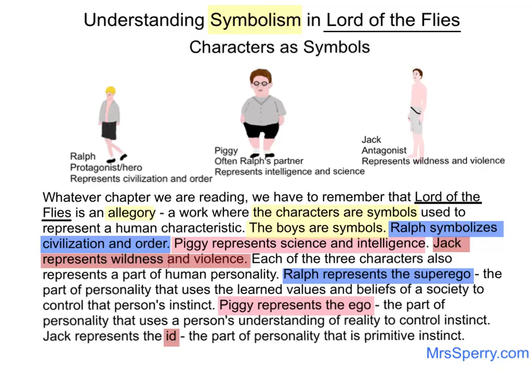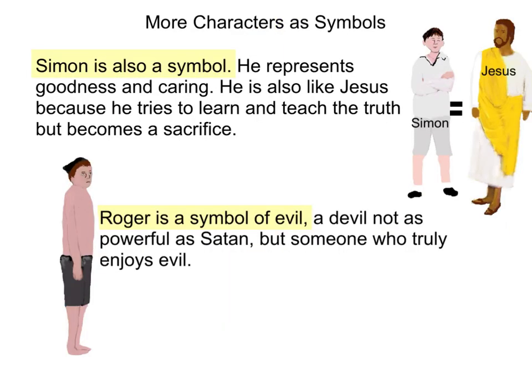Each of the three characters also represents a part of human personality. Ralph represents the superego — the part of personality that uses the learned values and beliefs of a society to control that person's instinct. Piggy represents the ego — the part of personality that uses a person's understanding of reality to control instinct. Jack represents the id — the part of personality that is primitive instinct.